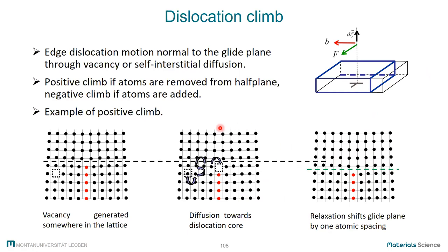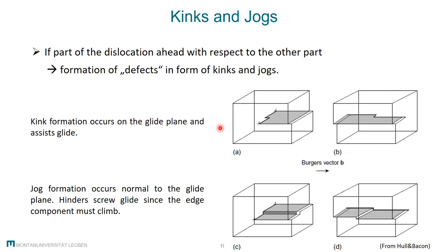As a next point, I would like to speak about defects on the dislocation line itself. A dislocation is a line defect, and on this line we can have defects which are quite important for dislocation motion. In practice, when a dislocation moves with some thermal activation, dislocations do not move in a straight fashion but always move a little bit irregularly, creating kinks. A kink is a line defect on the dislocation line.